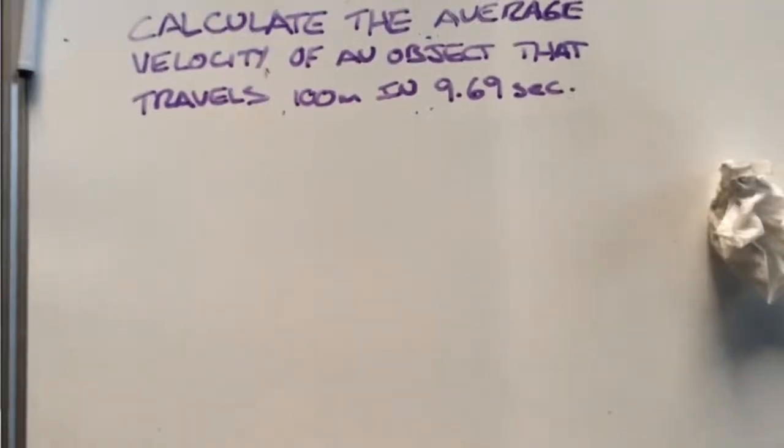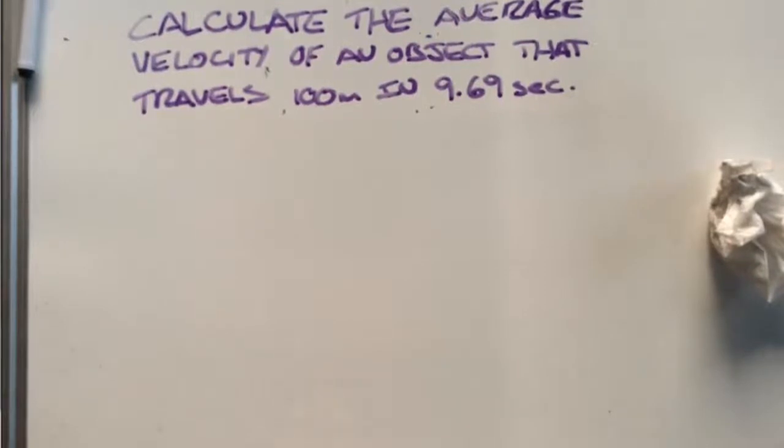Kia ora team. So here we have one of our calculations and the question states: calculate the average velocity of an object that travels 100 meters in 9.69 seconds.